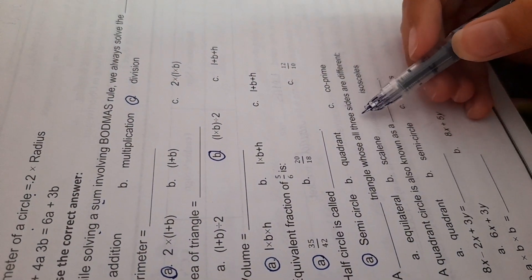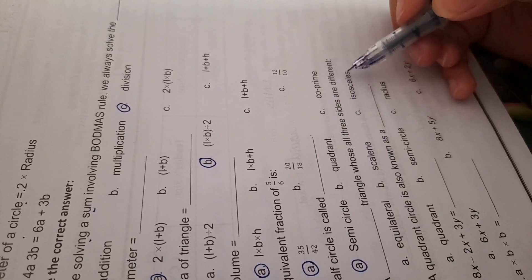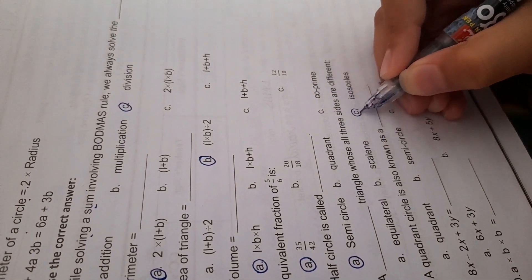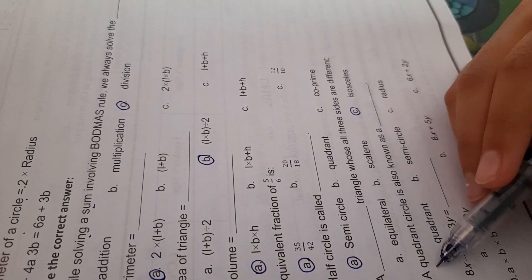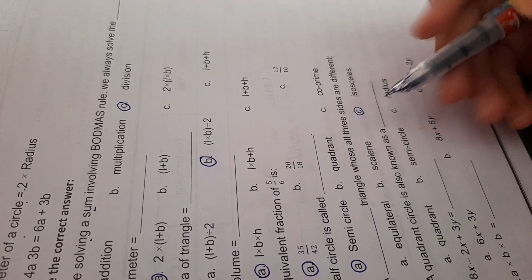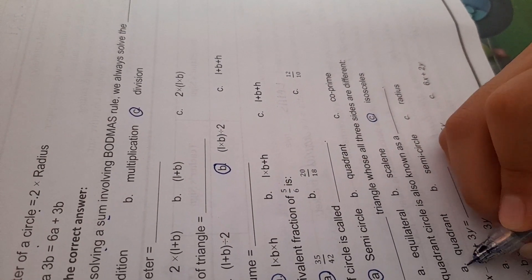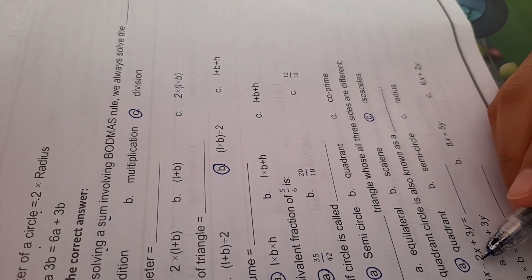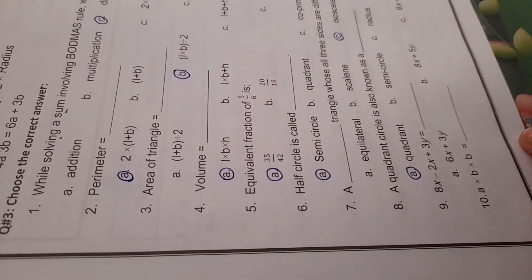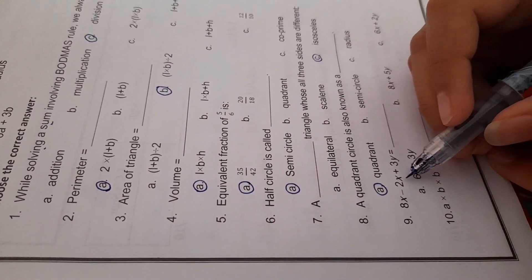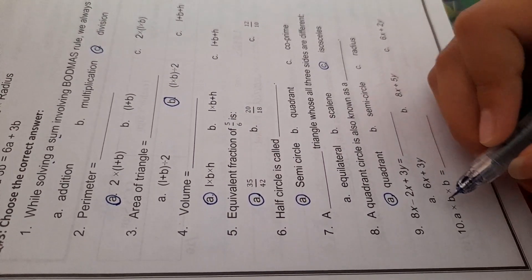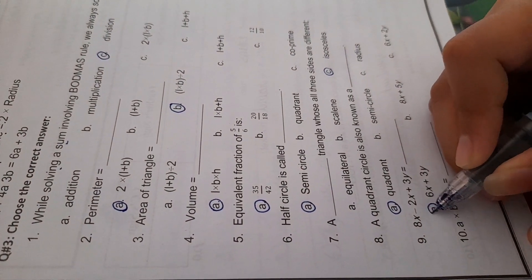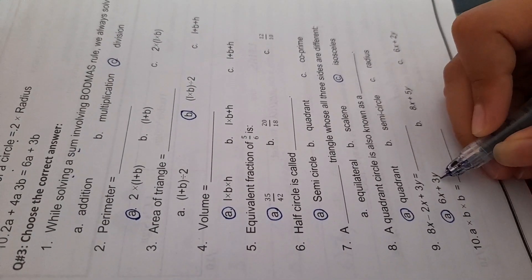Half circle is called semicircle. A dash triangle whose all three sides are different. A quarter circle is also known as a quadrant. 8x minus 2x plus 3y equals 6x plus 3y.